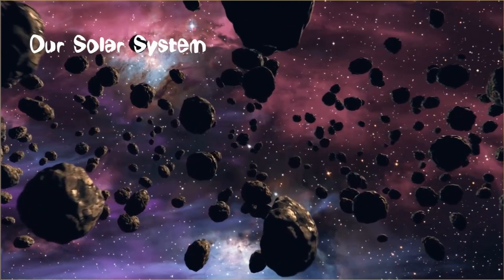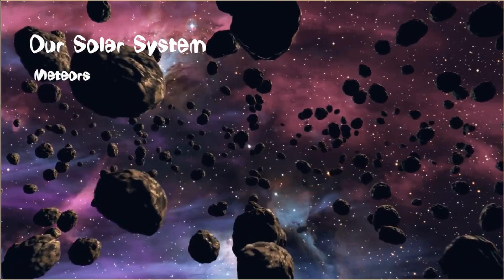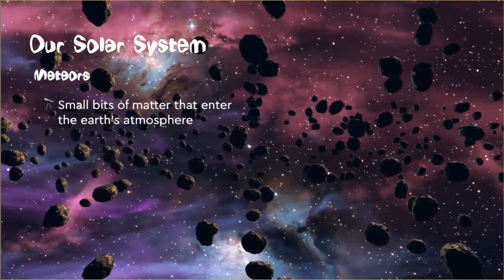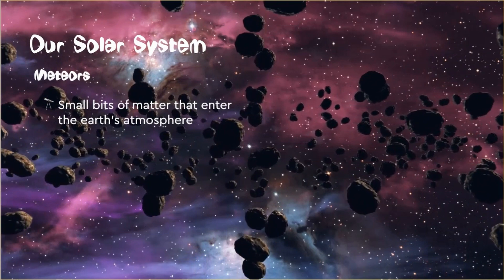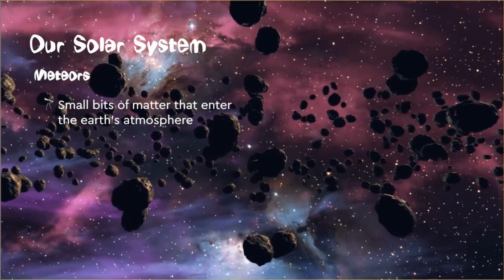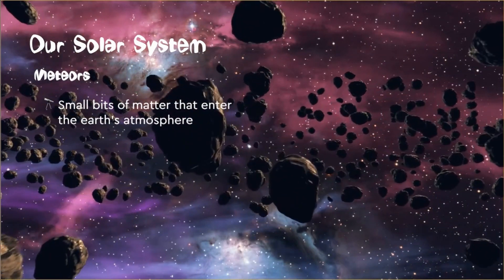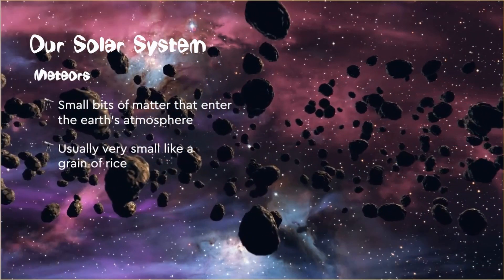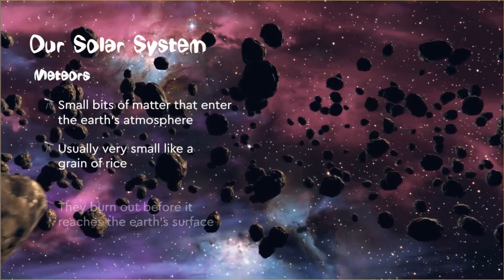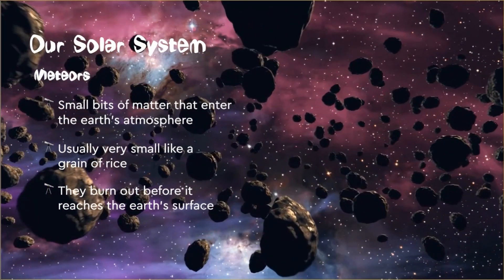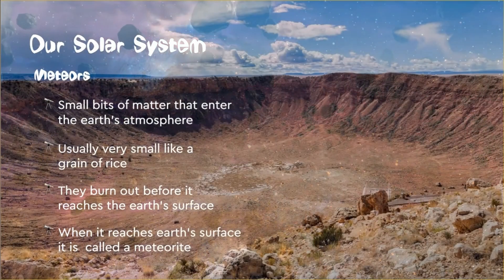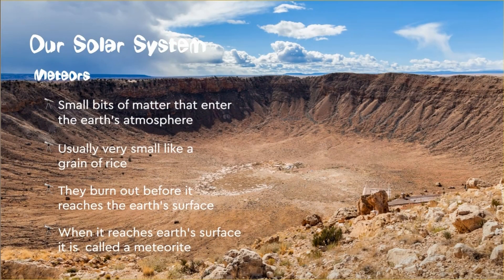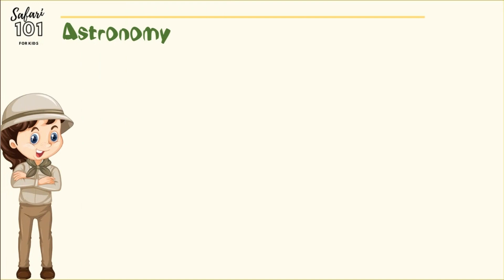A meteor — do you know what a meteor is? Meteors are small bits of matter that enter the Earth's atmosphere and create a bit of a tail. They are usually very small and burn up before reaching the Earth's surface. When one does reach the Earth's surface and makes contact, we call it a meteorite.